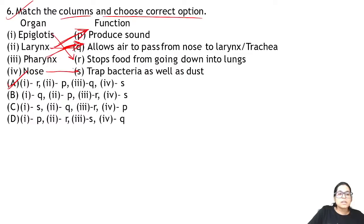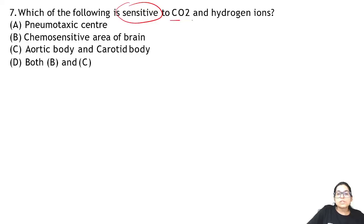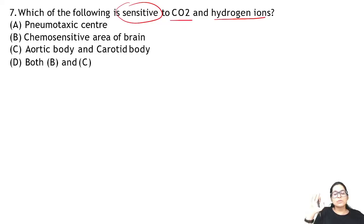Zoology Questions 6 and 7: match the columns and choose the correct option. Question 7: which of the following is sensitive to CO₂ and hydrogen ions? The answer is both B and C. This class happens daily at 8 PM — attending will give you a 20 to 30 marks boost in NEET.